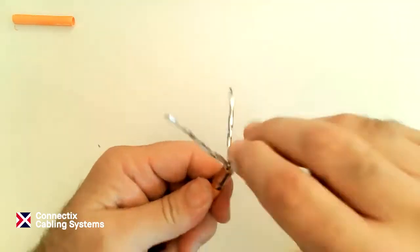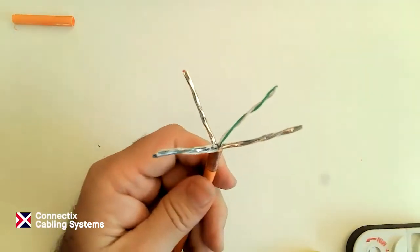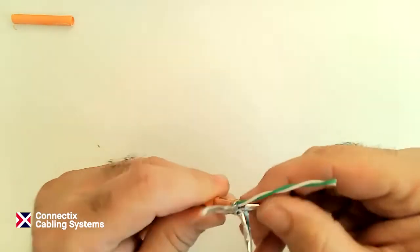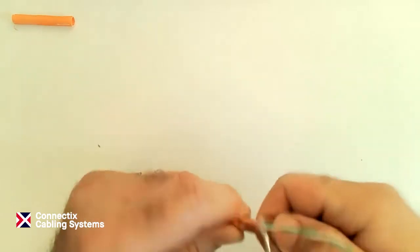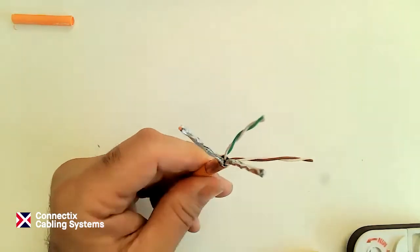Now I need to take my individual pairs and remove the foil from the individual pairs.